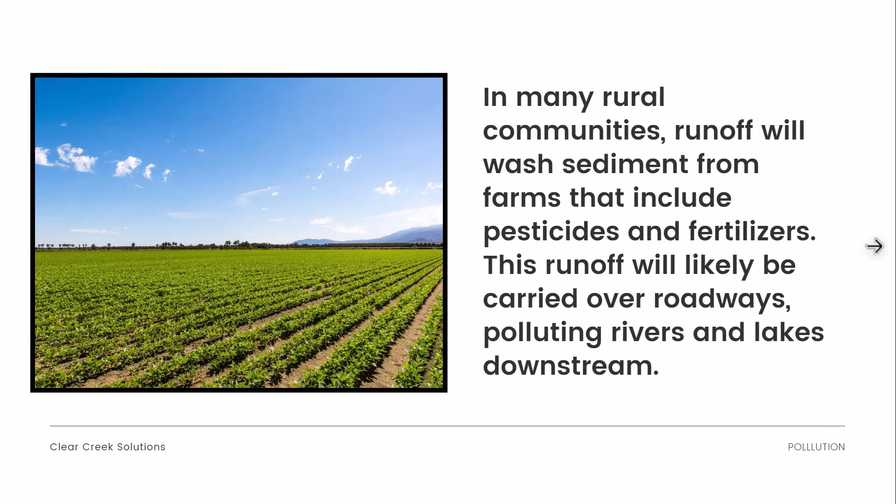In many rural communities, runoff will wash sediment from farms that includes pesticides and fertilizers. This runoff will likely be carried over roadways, polluting rivers and lakes downstream. In these rural communities, fertilizers, pesticides, and other chemicals are used on plants for growing or to keep pests from destroying crops. So when it rains, the water collects those chemicals as well and carries them downstream to lakes and rivers, and that has to be considered for treatment as well.